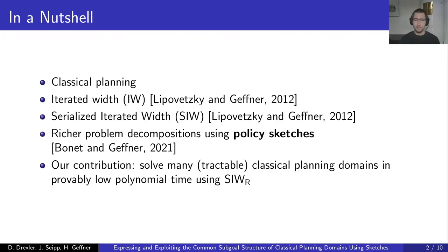The key search component that we are using is the Iterated Width algorithm, or simply IW, which works well if the goal consists of a single atom. If the goal consists of a conjunction of atoms, then the Serialized Iterated Width algorithm, or simply SIW, decomposes the problem into smaller sub-problems by using a sequence of IW searches, each decreasing the number of unsatisfied goal atoms.